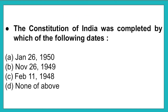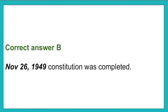The next question: The constitution of India was completed by which of the following? Option A: January 26, 1950. Option B: November 26, 1949. Option C: February 11, 1948. Option D: None of the above. The correct answer is option B, that is November 26, 1949, when the constitution was completed.